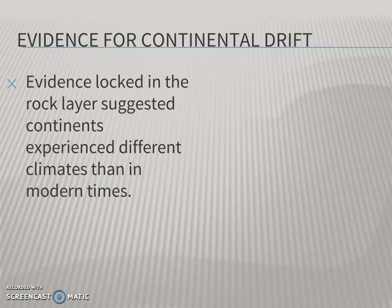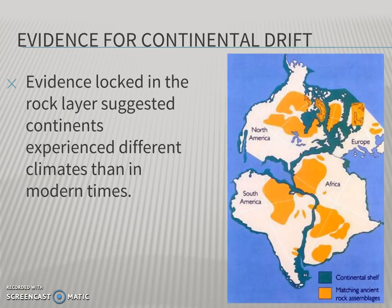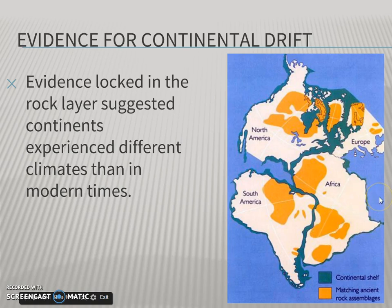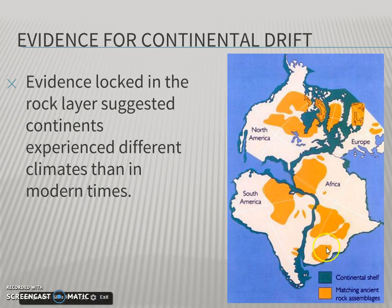Finally, the third piece of evidence: locked in the rock layers were clues suggesting that continents experienced different climates than they do today. These rock layers contain glacial carvings and scrapes indicating that a continent — say, Africa — was once experiencing a much colder climate, meaning it was probably located in a more polar position than it is today. Glaciers scraping and marking the ground help us determine that, and Alfred Wegener saw this.